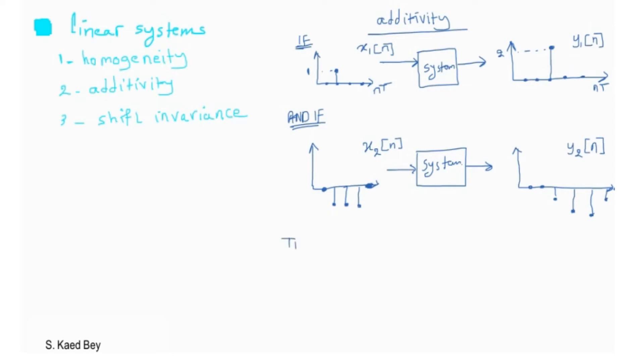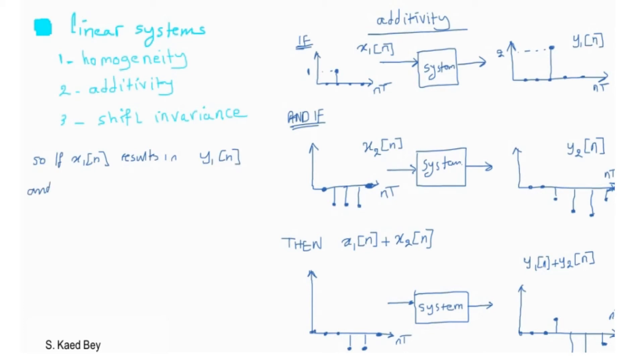Further, suppose that a different input x2 produces another output y2, then the system is said to be additive if an input of x1 plus x2 results in an output of y1 plus y2 for all possible input signals. In other words, signals added at the input produces signals that are added at the output.